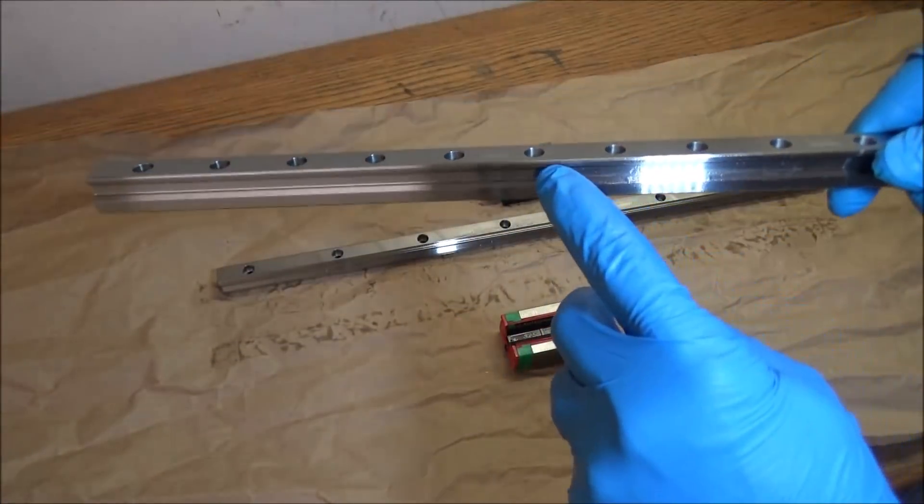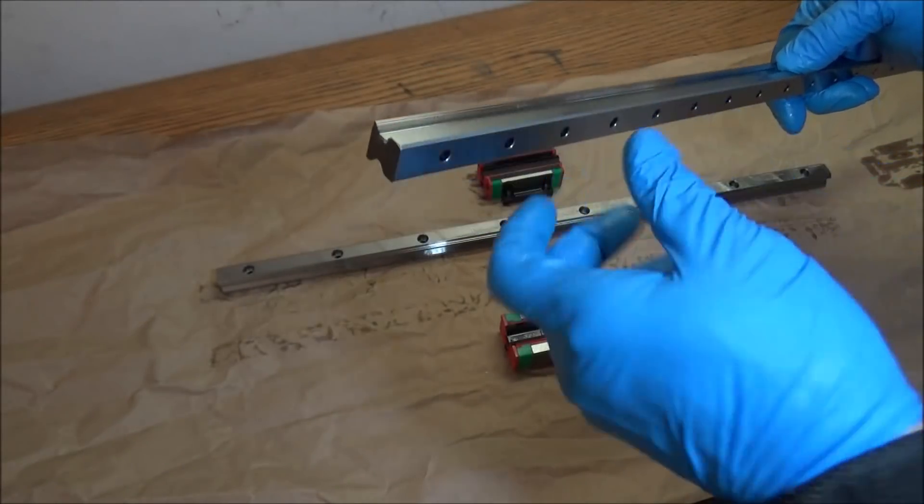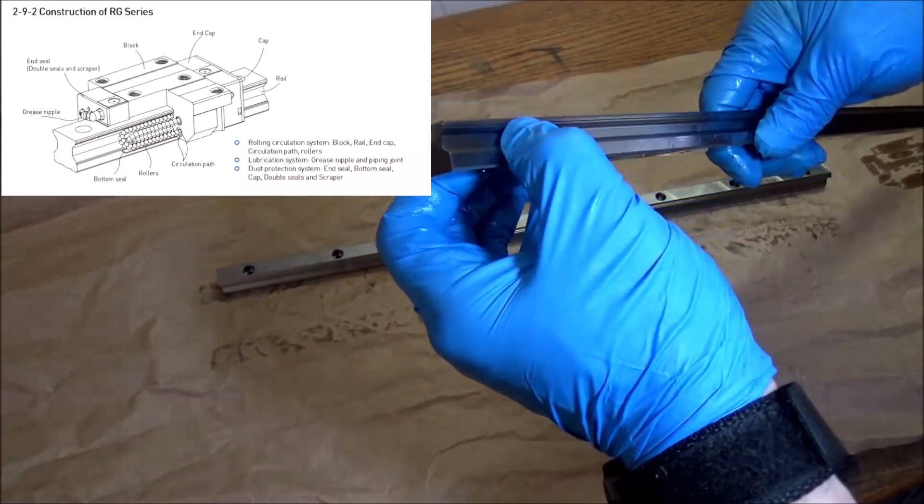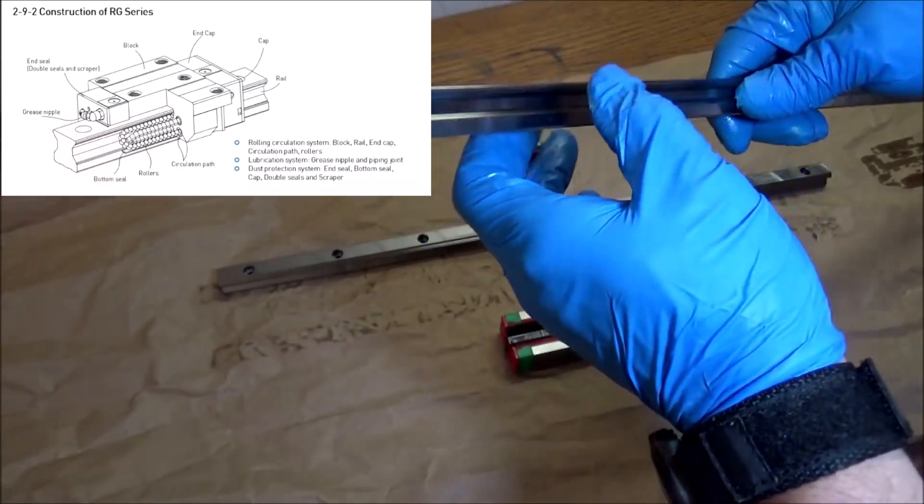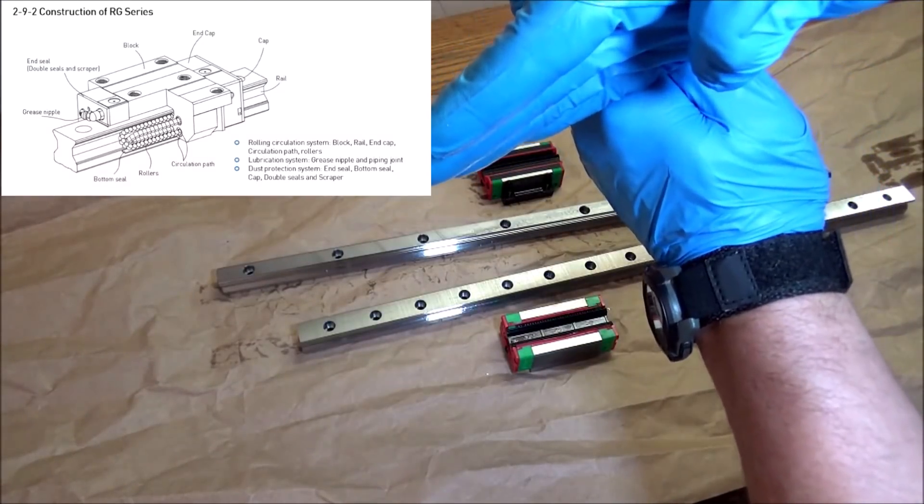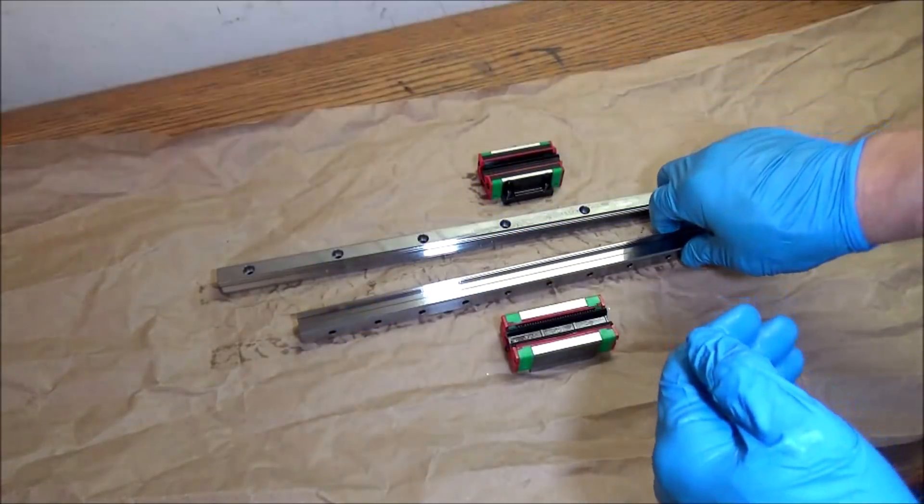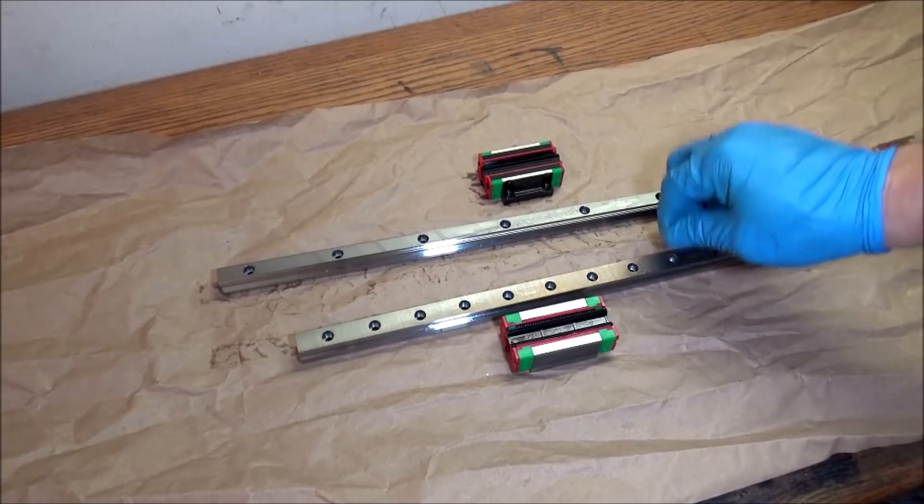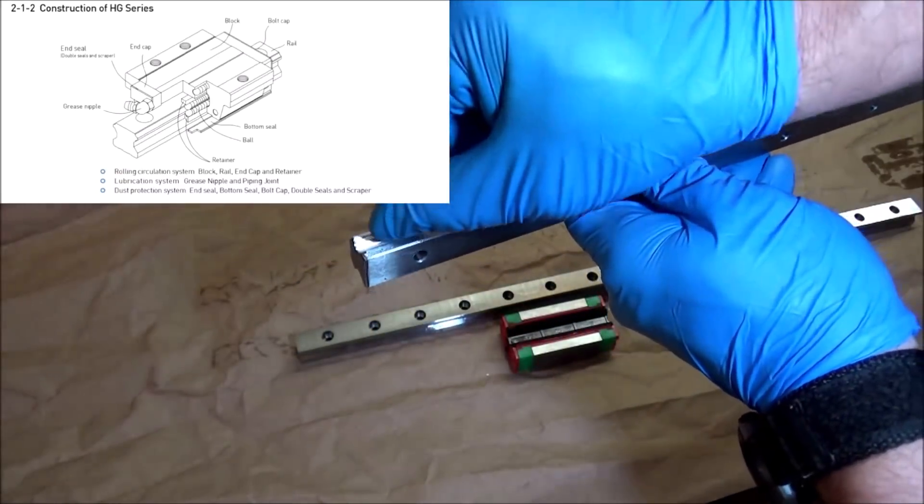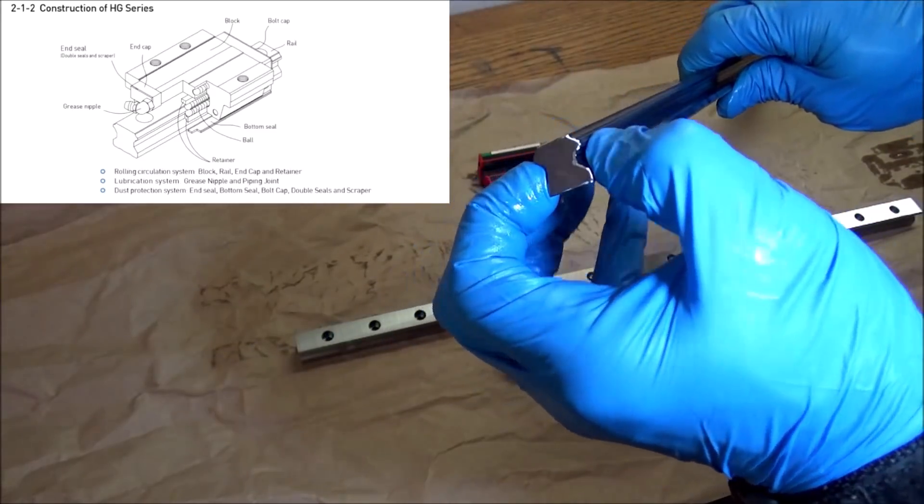The reason being is the RG series rides on this particular chamfer here and this one right here. The rollers are forced this way and this way, so it's like an X shape design. The rollers are in there like that and they're pushing this way and pushing this way to keep the load. This gives it extra rigidity and higher load ratings. The HG series, these balls are riding on this edge and this edge, so it's a little different. They're not riding at the bottom at all.